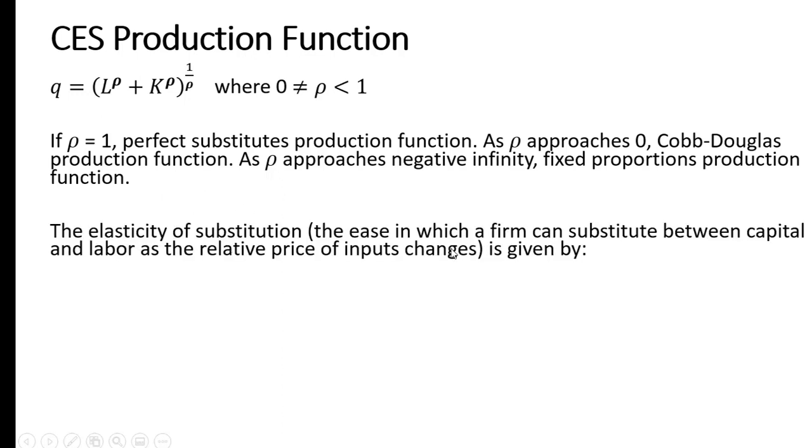The elasticity of substitution, the ease in which a firm can substitute between capital and labor as the relative price of inputs changes, is given by the following. So sigma, the elasticity of substitution, equals 1 divided by 1 minus rho, where rho again is a parameter in our CES production function. And here we're going to restrain rho from being less than 1, but not equal to 0.